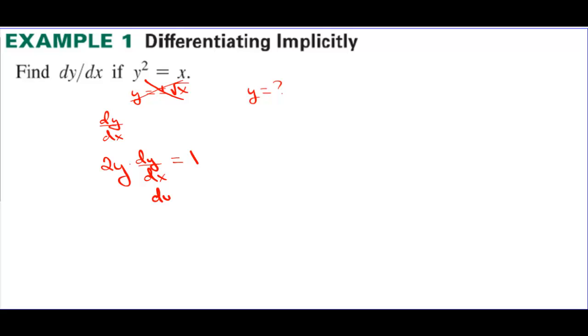So dy/dx equals 1 over 2y. We divide both sides by 2y to isolate dy/dx.